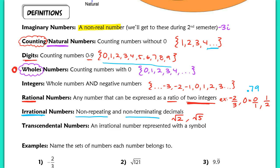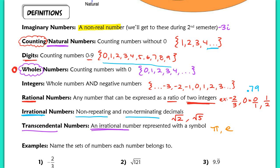Finally, we have transcendental numbers. These are also irrational numbers, but they're represented with a symbol. The most famous transcendental number is pi. Another one you'll use in pre-calc is e. We'll see e occasionally in this course but won't go deeply into its value.